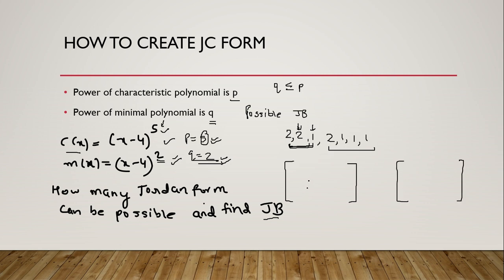Now you have to write the eigenvalues in the principal diagonal. What is the eigenvalue? If the characteristic polynomial is of the form (a minus lambda), then the eigenvalue is 4. So these are the possible Jordan blocks.